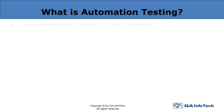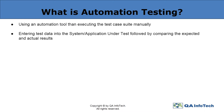Automation testing essentially refers to the use of an automation tool to execute a test case suite instead of executing the test cases manually. In test automation software or framework, test data is entered into the AUT, which is then followed by comparing the expected and actual results. It also generates a detailed report at the end. Since there are several development cycles, automation helps in executing the same test suite repeatedly.